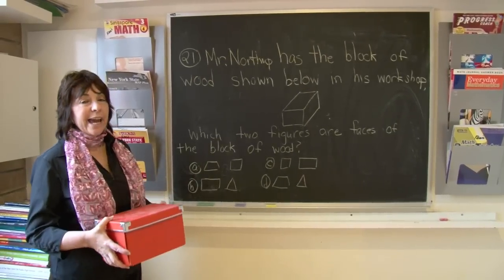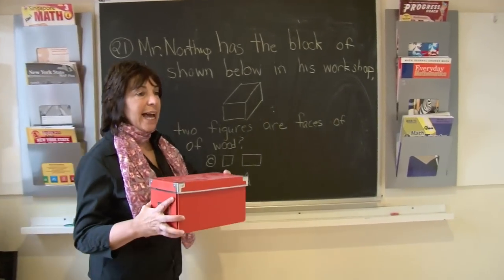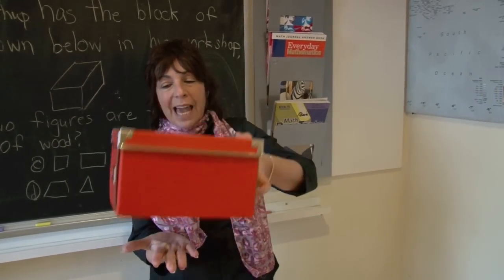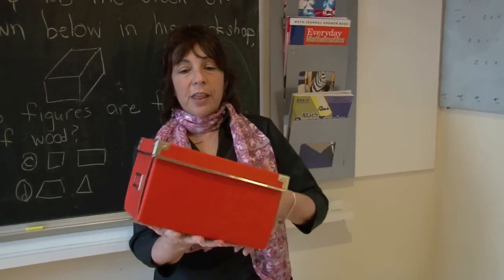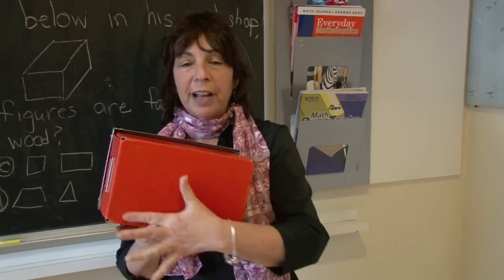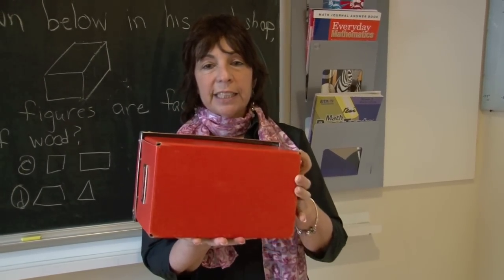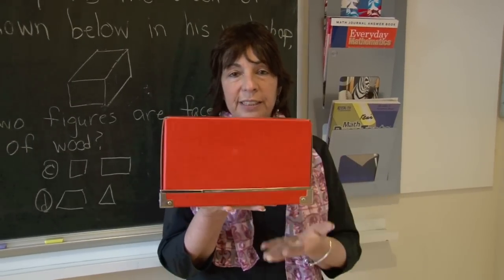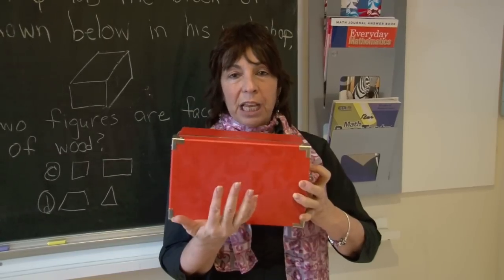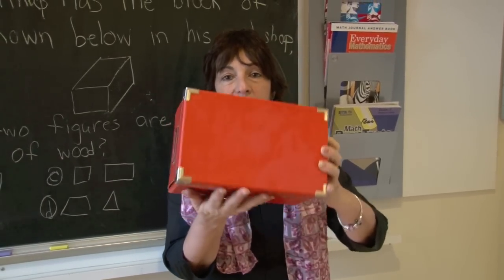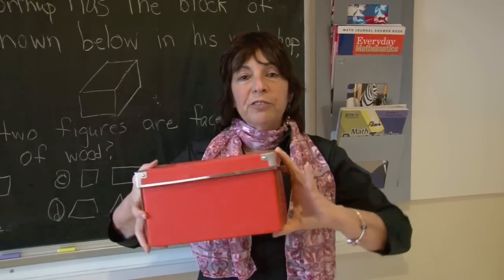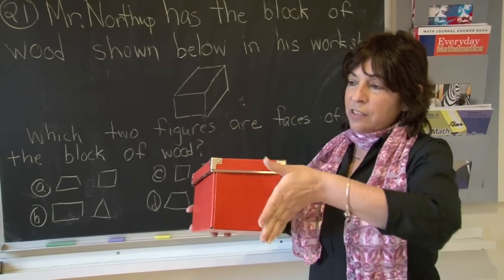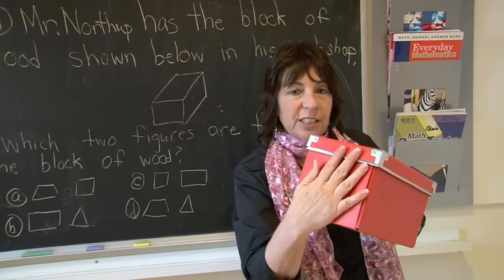Let's look carefully at a rectangular prism. It has six faces. A face is something that you may lay it flat on. One face — this shape is the shape of a rectangle. Two faces — I can lay it this way, again the shape of a rectangle. Three faces — again the shape of a rectangle. And the fourth face, shape of a rectangle. But if you look at the side, the sides are two squares. This face is a square, and this face is a square.